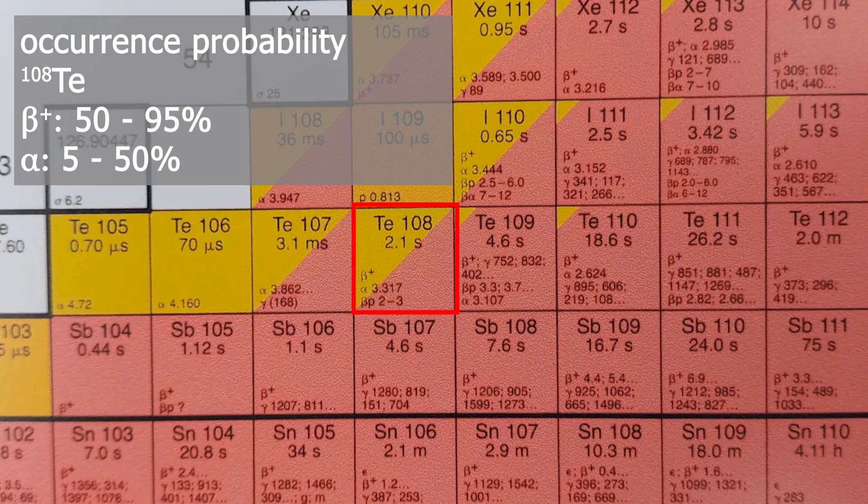You might rightfully ask now how do we know that the distribution is the way it is and not the other way around? This has to do with the order in which these decays are listed inside the tile. The occurrence probability is only shown by the relative size in this case it's 50-50 and the arrangement of the energy values inside the tile.